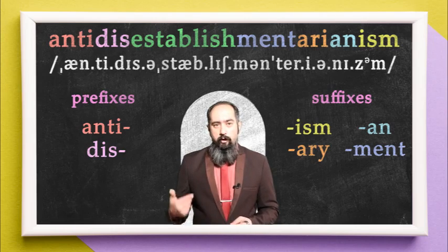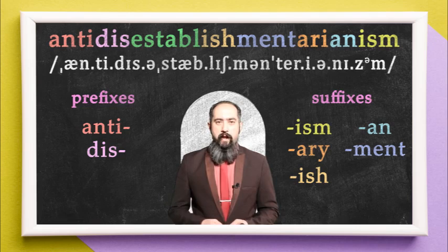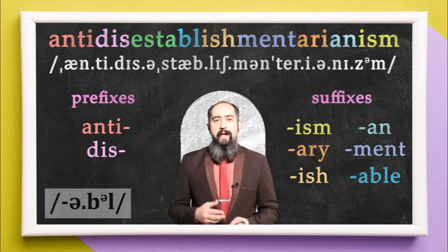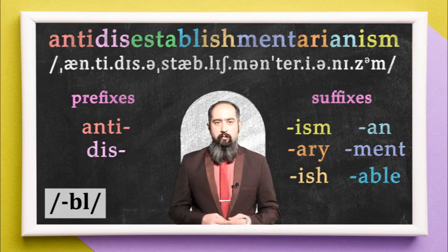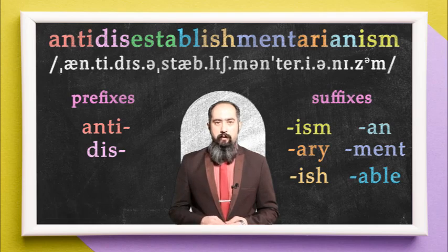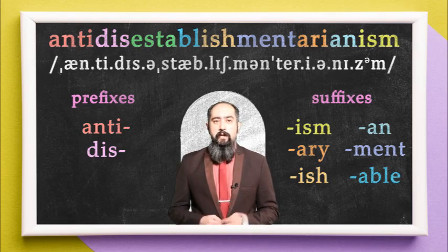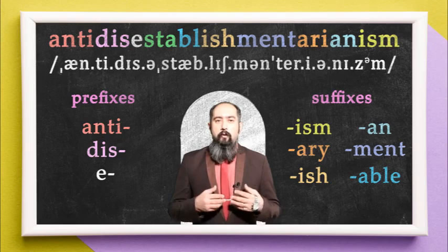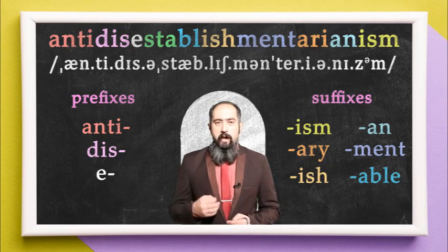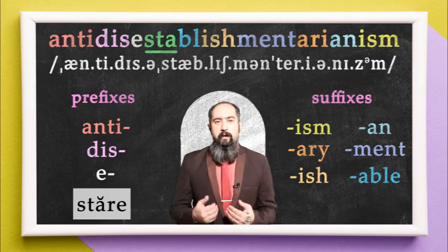Again, more suffixes: -ish (I-S-H), another adjective maker. And before that, we've got -able — in some cases spelled -ible or -ble — another adjective maker. And maybe it's better to say the last prefix, which is a verb maker. What remains as the stem is just S-T-A, meaning 'to stand.' It is the Latin verb 'stare,' which means to stand.